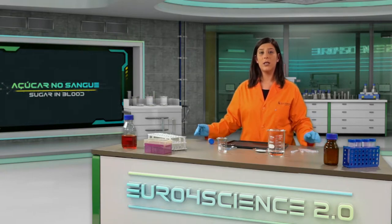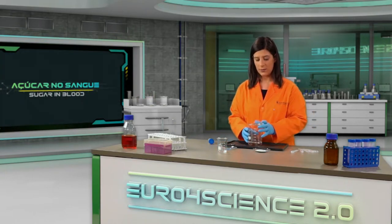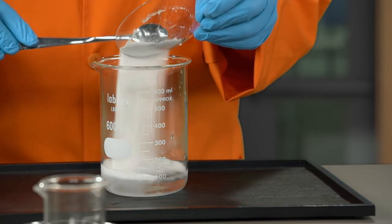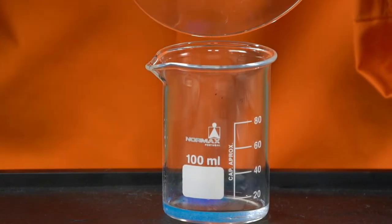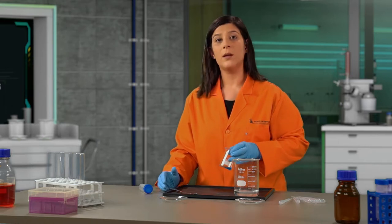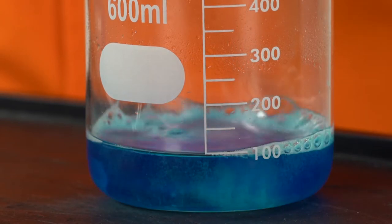Vamos começar por preparar o reagente de Benedict. Num copo com 100 ml de água quente, adicionamos 14 gramas de sal de fruta N. E no outro copo, dissolvemos 1 grama de sulfato de cobre em 5 ml de água quente. De seguida, misturamos as duas soluções, agitamos e temos o reagente de Benedict.